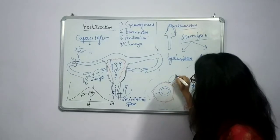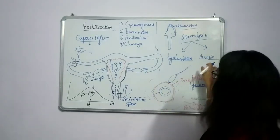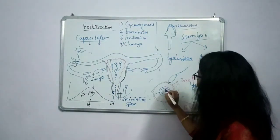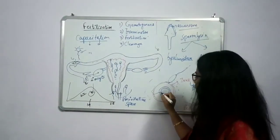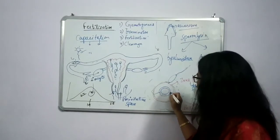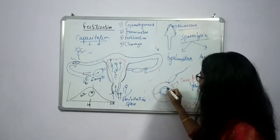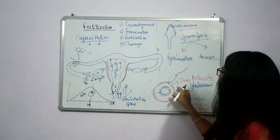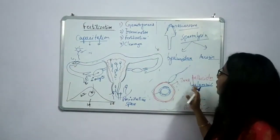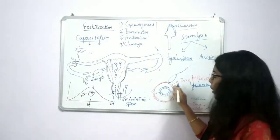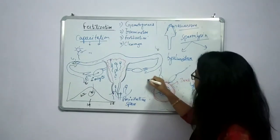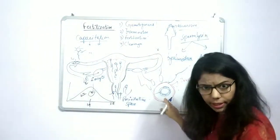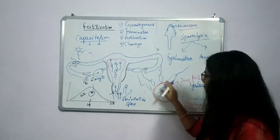Once the corona radiata is removed, only the zona pellucida remains. The acrosin enzyme helps to remove the zona pellucida as well, so the sperm can enter inside easily. When acrosin removes this, the plasma membrane of the ovum — which is a cell — forms a new structure known as the perivitelline membrane, and the space formed here is known as the perivitelline space. Due to this perivitelline space, some composition is secreted so that the zona pellucida becomes thicker and thicker.